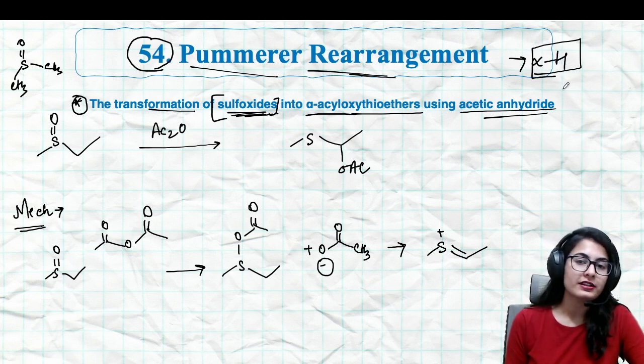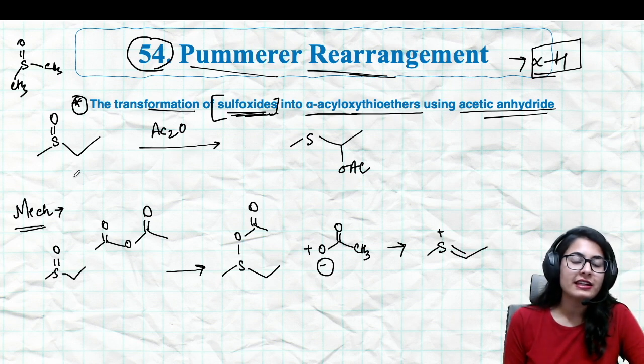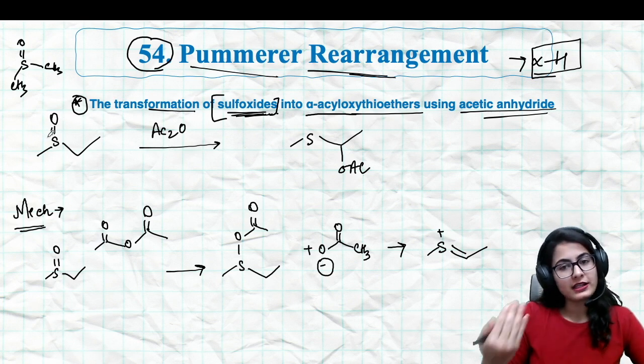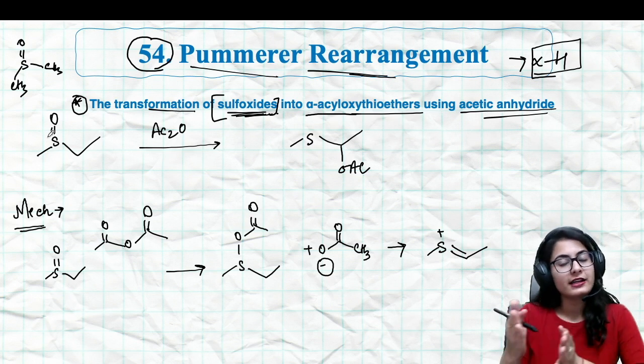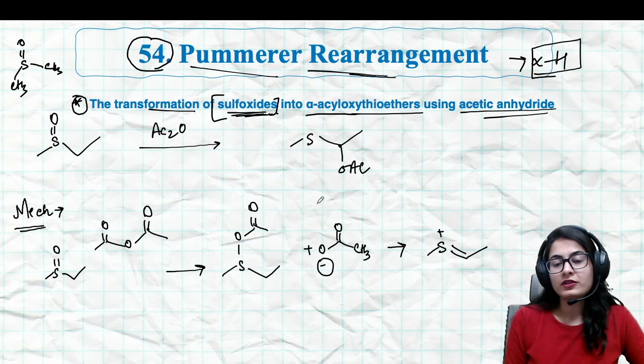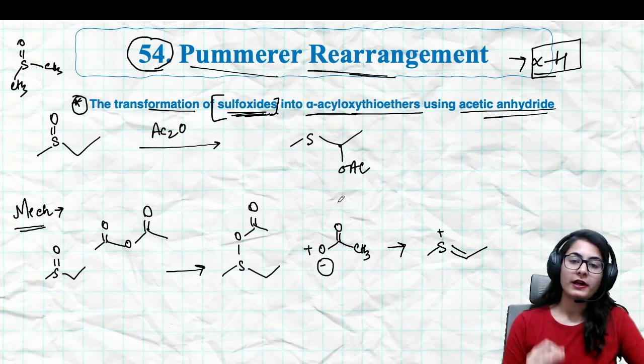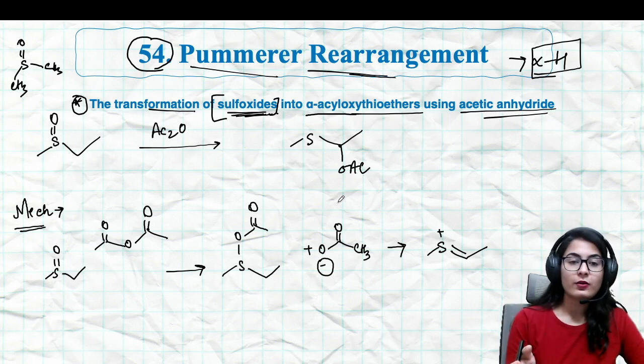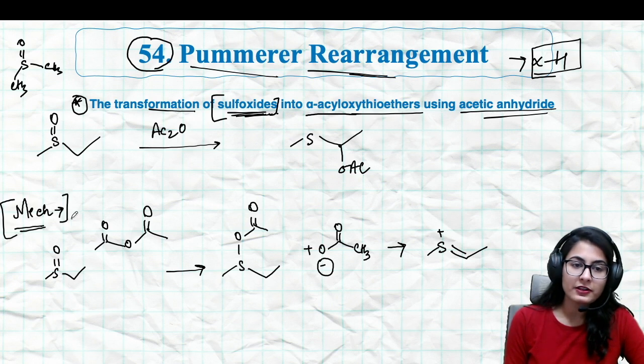The primary requirement of this rearrangement reaction is that you must have an alpha hydrogen - that's most important. Let's see what happens to this sulfoxide molecule in the presence of acetic anhydride. The oxygen gets eliminated from sulfur and it's rearranging from sulfur to its alpha position, and we have an acyl group attached over here. This is the primary reaction involved in your previous year question.